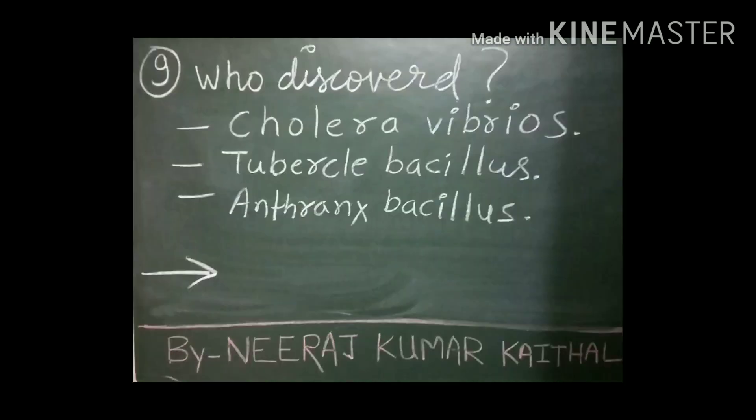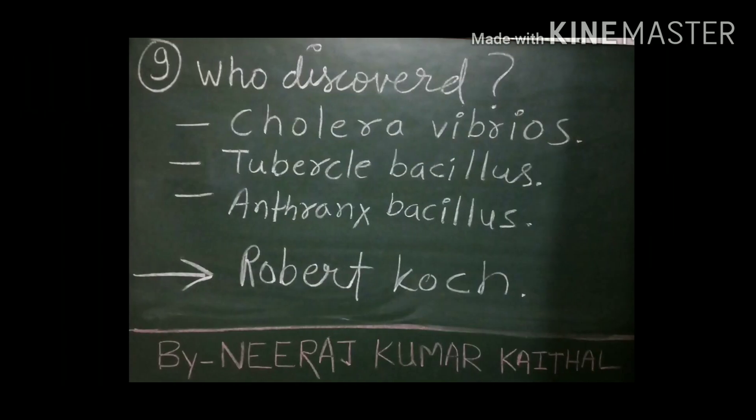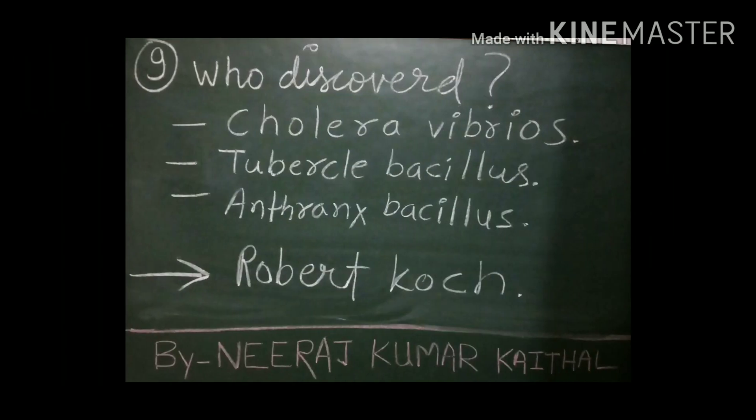Question number nine: who discovered cholera vibrios, tubercle bacillus, and anthrax bacillus? Robert Koch. Robert Koch discovered cholera vibrios, tubercle bacillus, and anthrax bacillus.